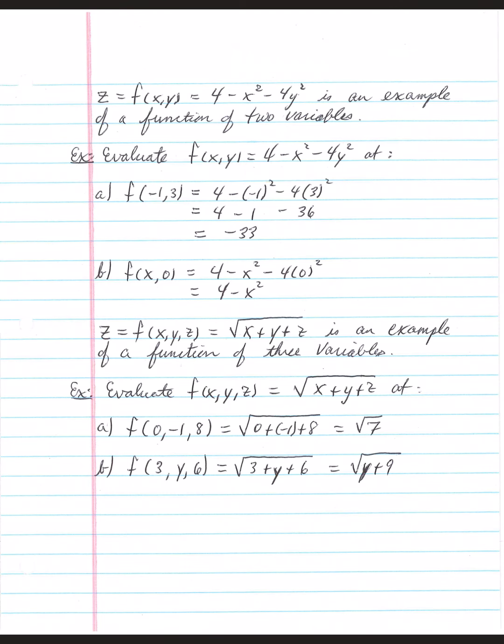And we're going to evaluate that first at negative 1, 3. Replace all the x's in your function with a negative 1, all the y's with a 3. So that gives us, it's sort of an easy substitution. We put a negative 1 in place of x, 3 in place of y.